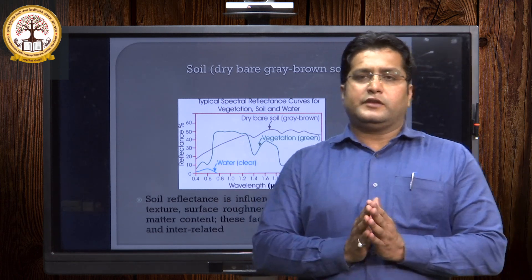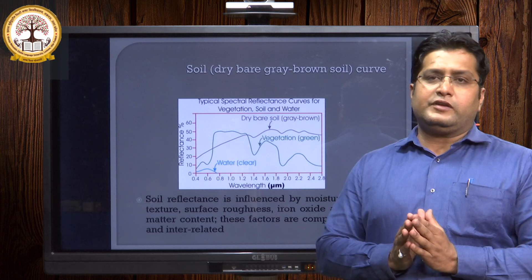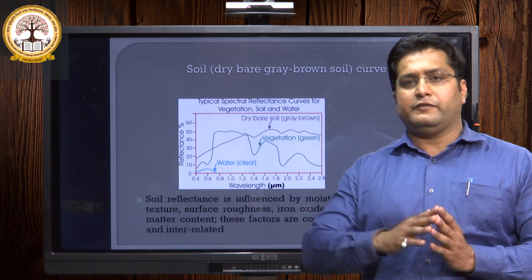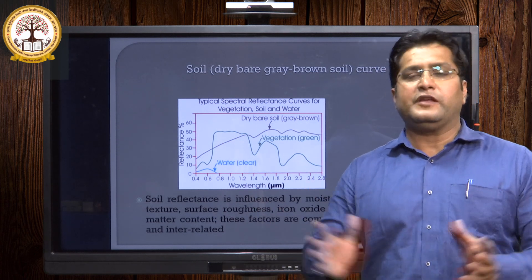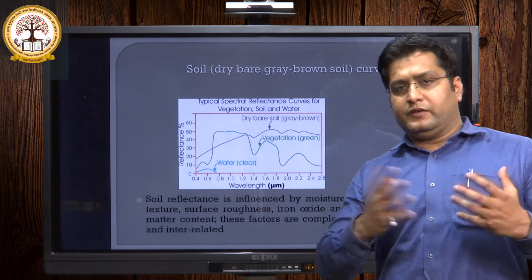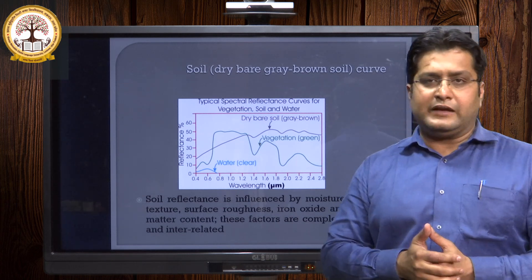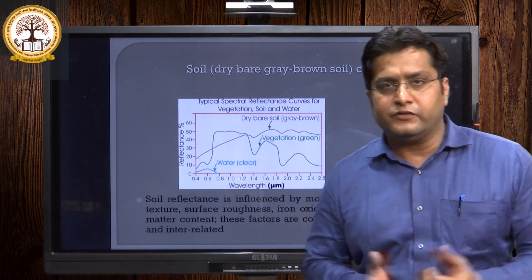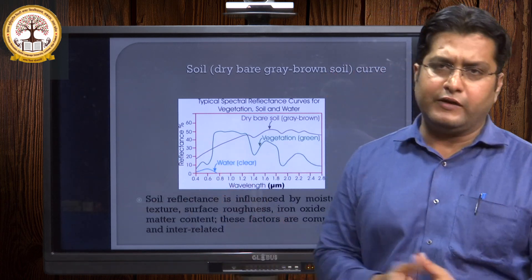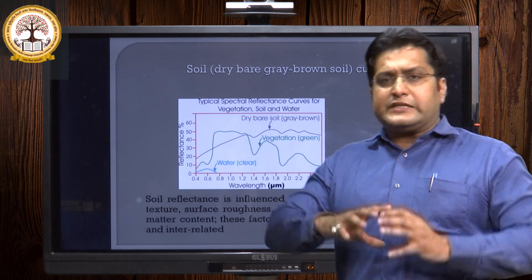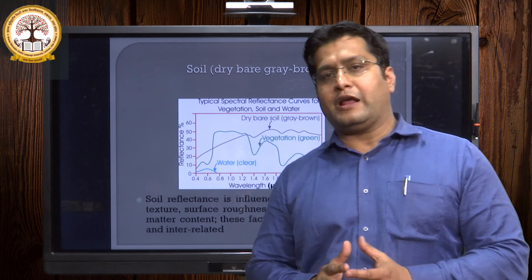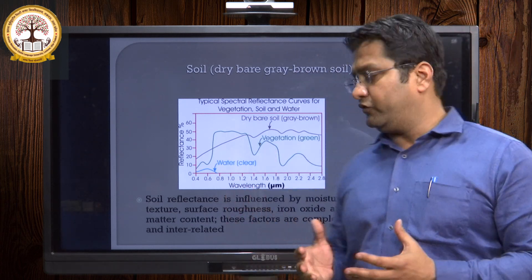Soil characteristics always vary from one place to another. When we move from one place to another, in some areas you can see black soil, in some areas red soil, and in some areas yellow soil. So the characteristics will change with change in topography and location.